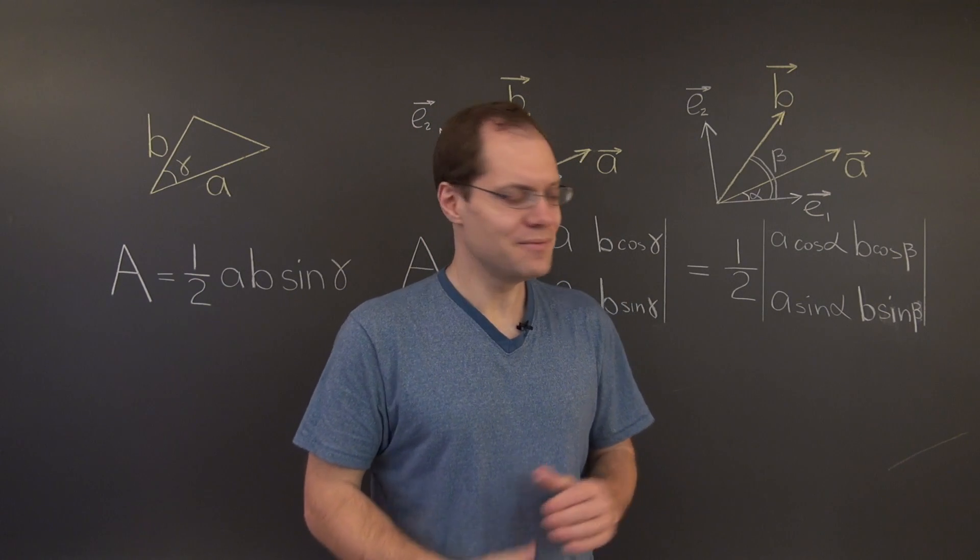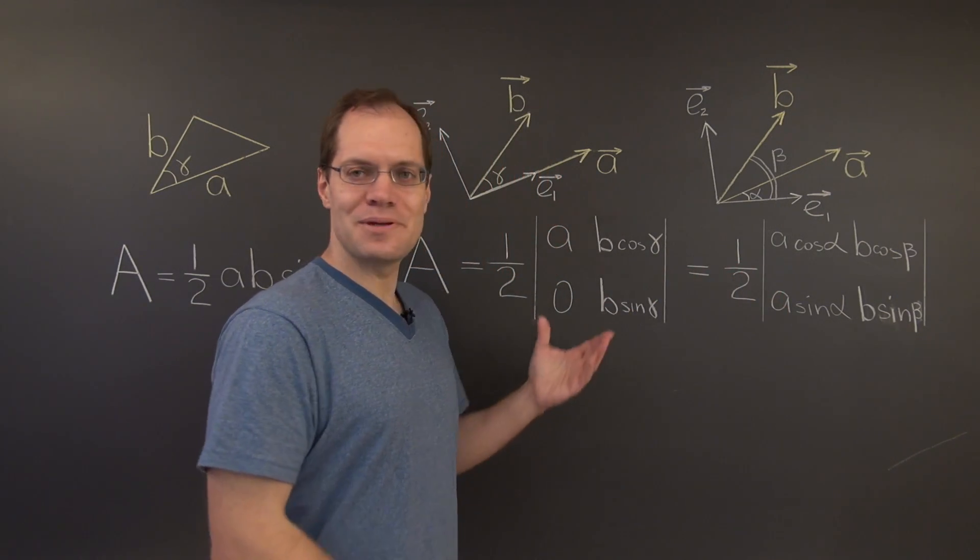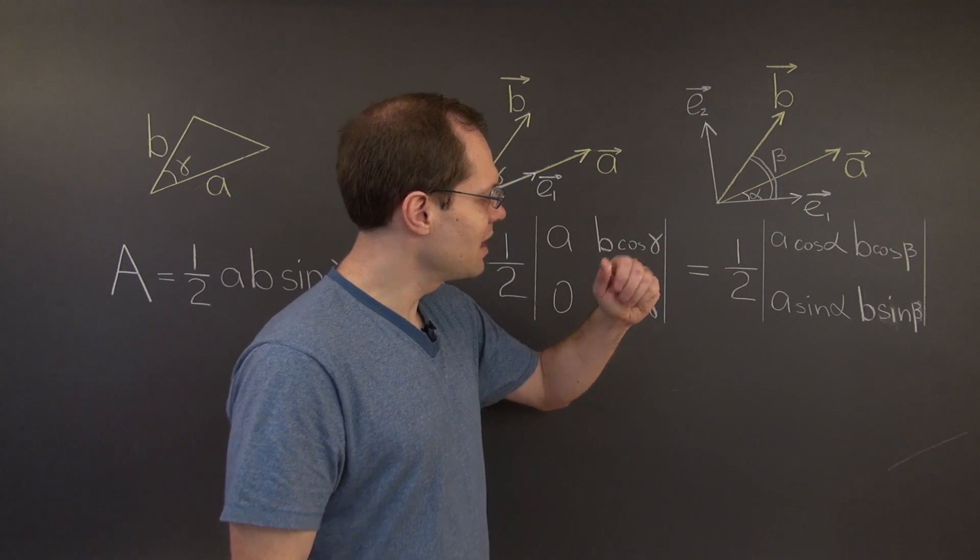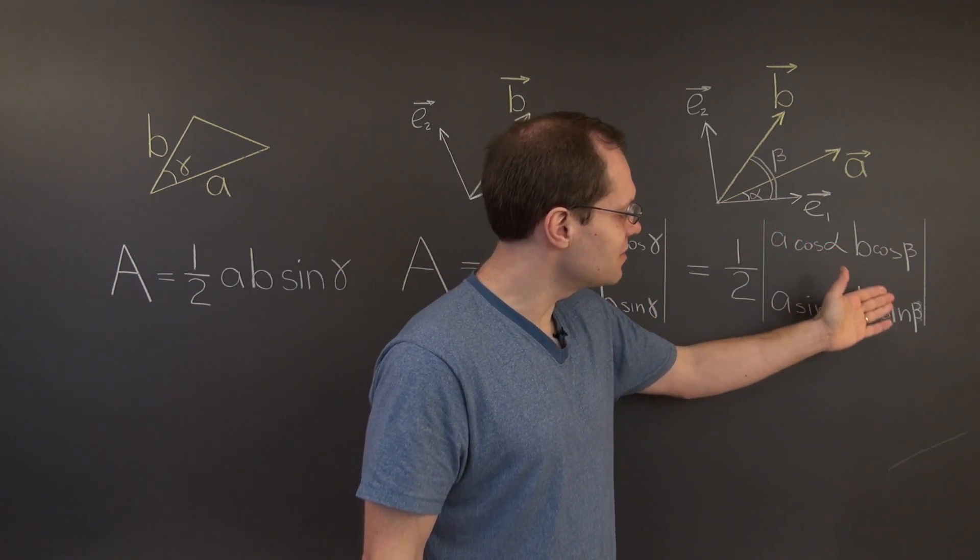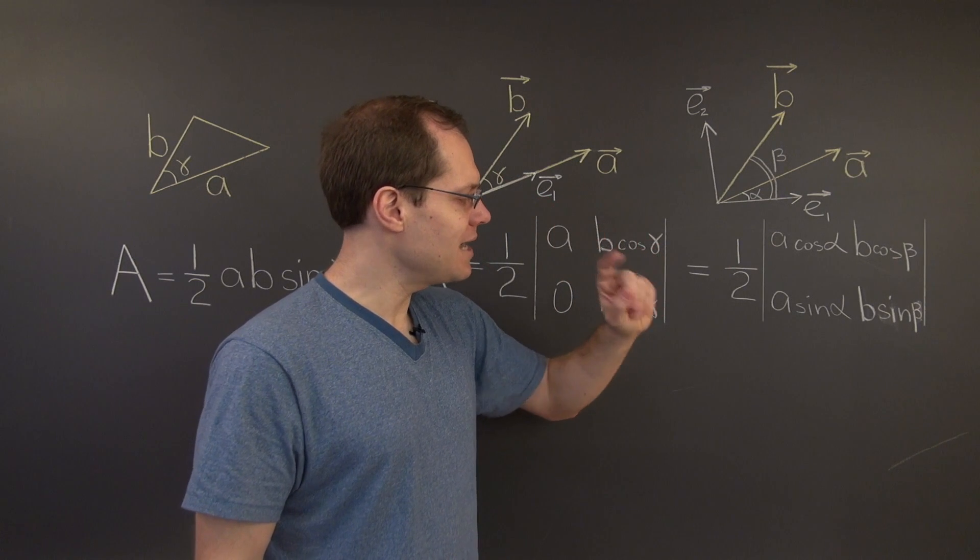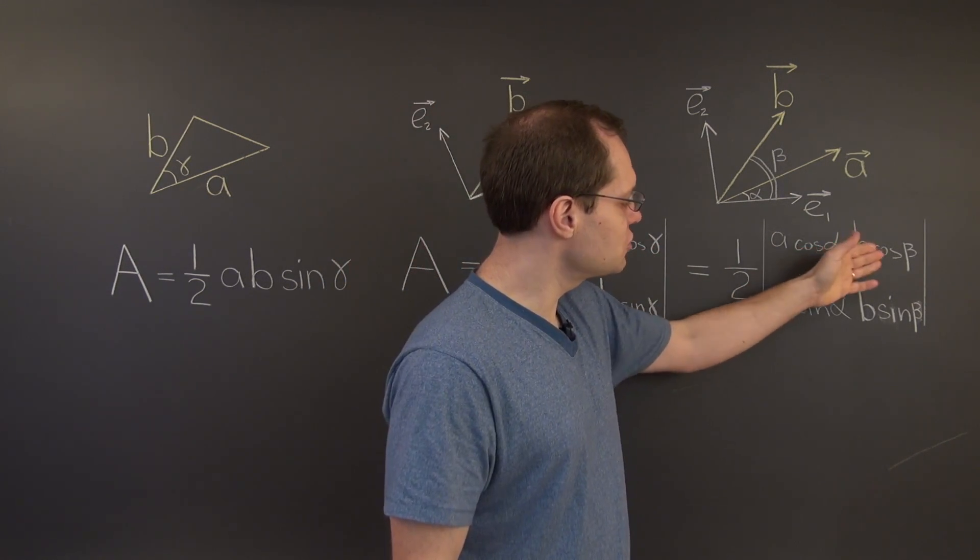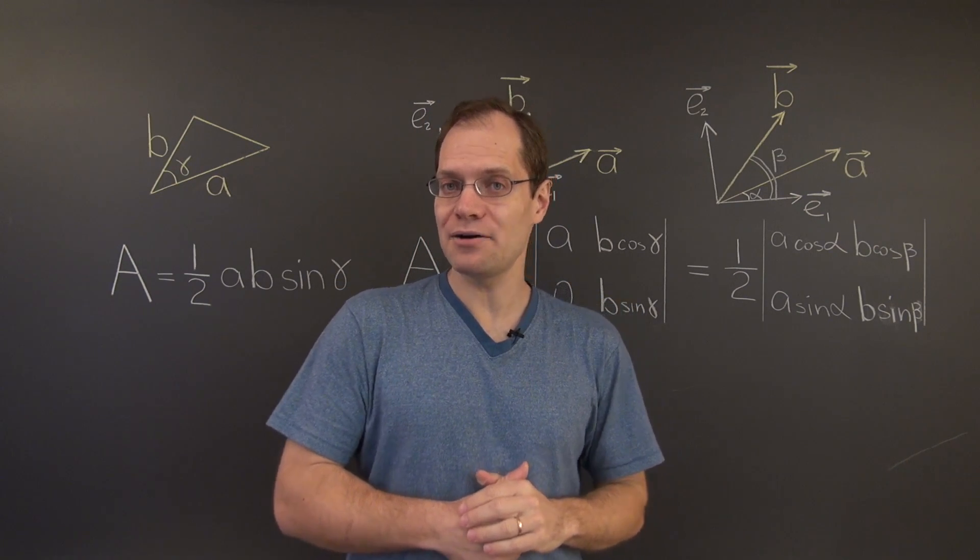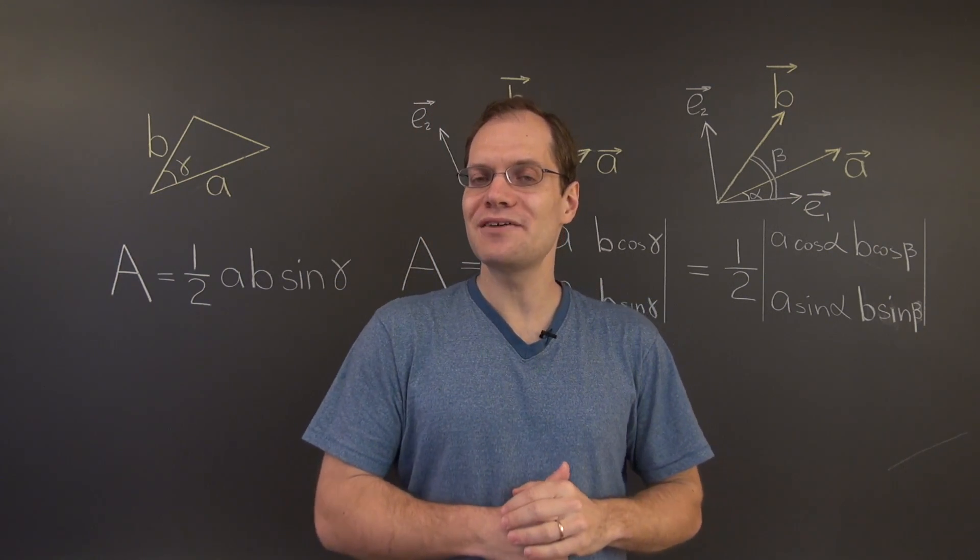Okay, and I think you will agree that this determinant is a little bit more interesting than this one. Well, what is this determinant? It'll be A B cosine alpha sine beta minus A B cosine beta sine alpha. Of course, I will factor A B out.